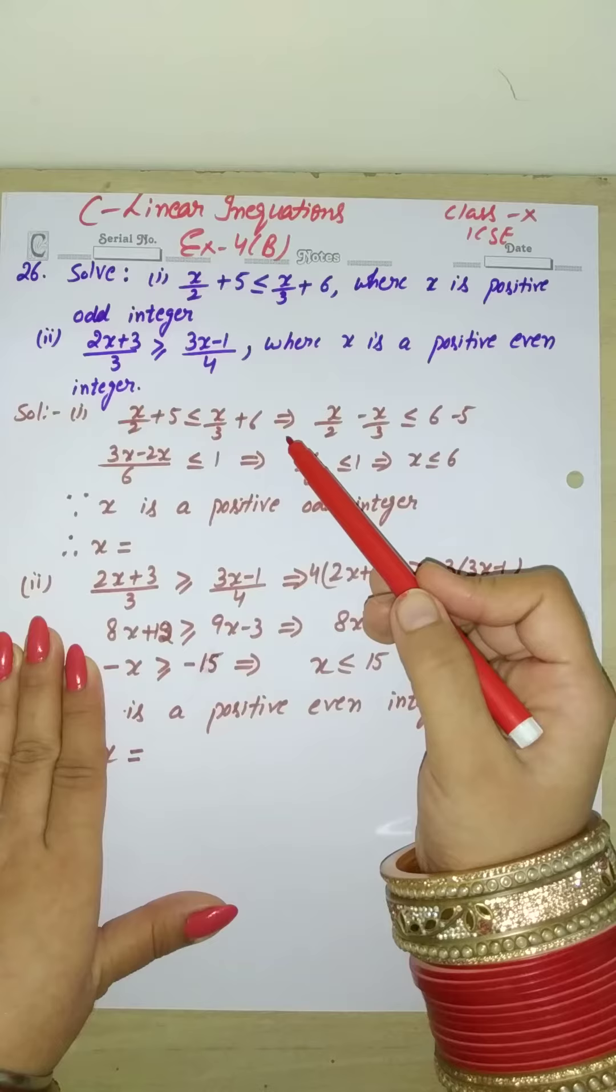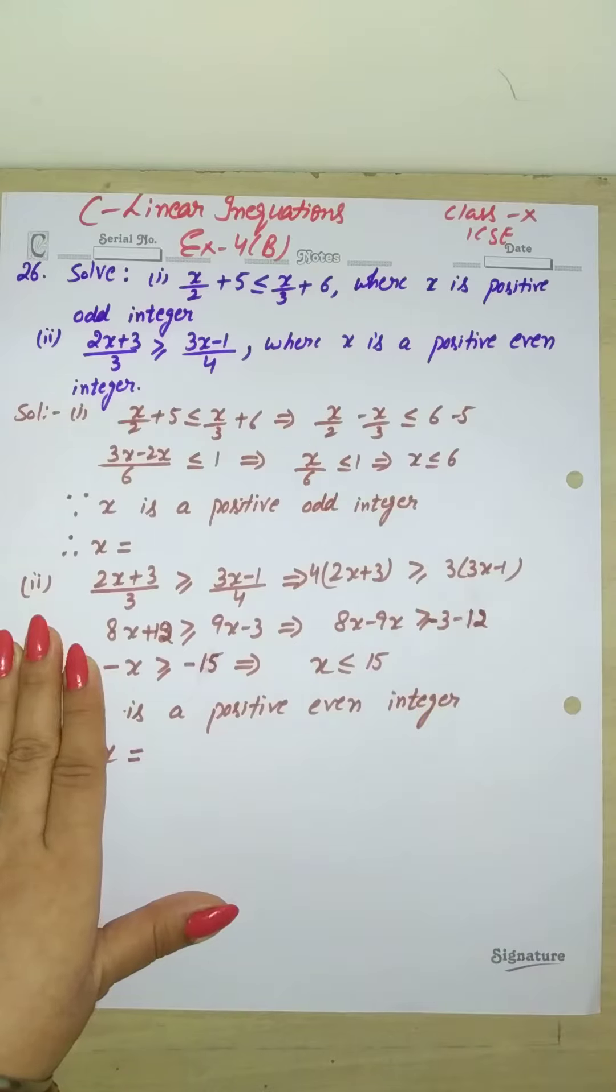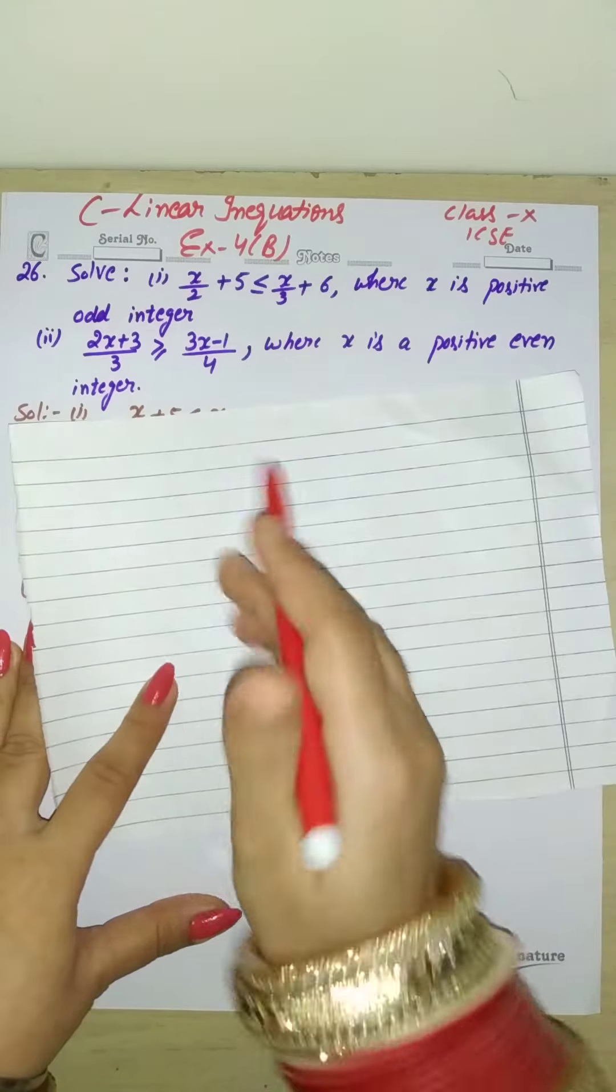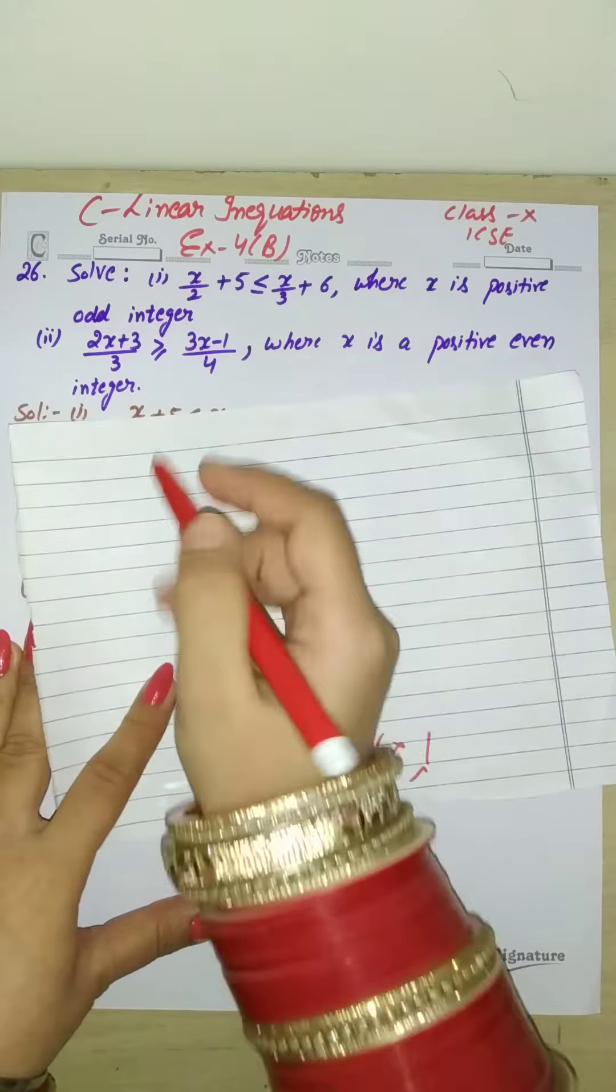First of all, you need to have even and odd number knowledge. Let's see which even numbers are multiples of 2: like 2, 4, 6. And which odd numbers are: like 1, 3, 5.